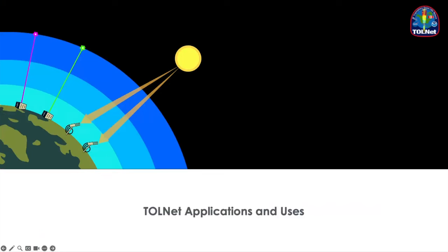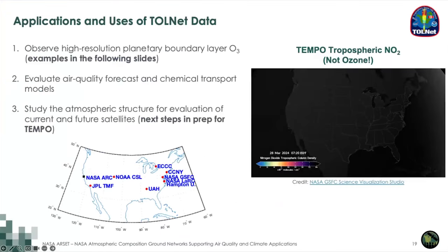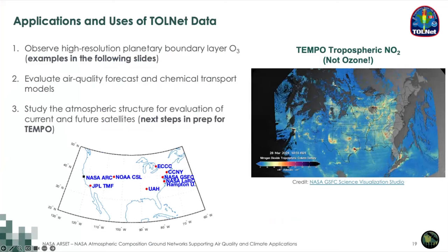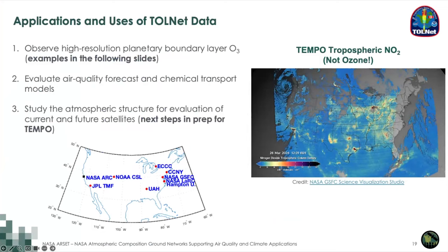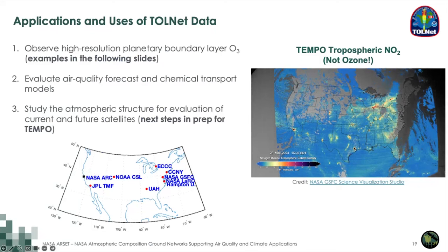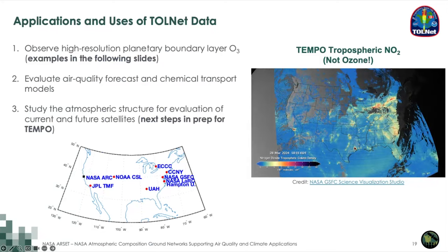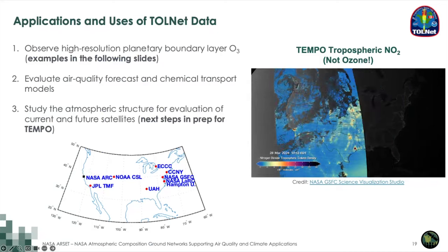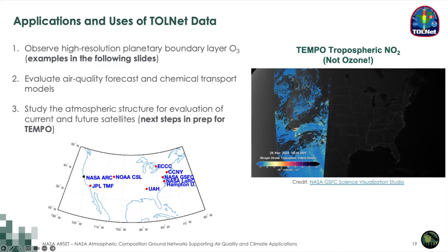The next section is on TOLNet applications and uses. This session will describe various profiles of ozone from TOLNet and how we can better connect those profiles to the larger community. The three main components TOLNet was chartered to do are: to observe high-resolution planetary boundary layer ozone; to be used to better evaluate air quality forecast and chemical transport models; and to study atmospheric structure for evaluation of current and future satellites, including the TEMPO satellite and its tropospheric ozone product.